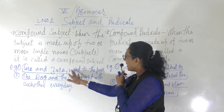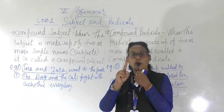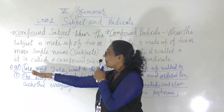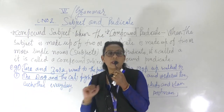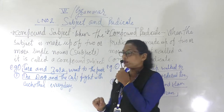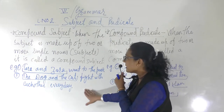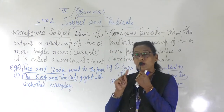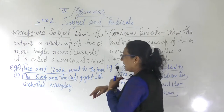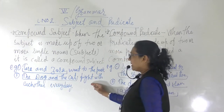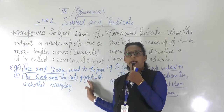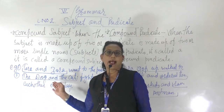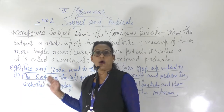For example: Tara and Zara went to the farm. Not only Tara — Tara and Zara went to the farm. So Tara and Zara is a compound subject here. The second example: the dog and the cat fight with each other. Here the nouns are the dog and the cat, so this is called a compound subject. Wherever two or more nouns come together, it is called a compound subject.